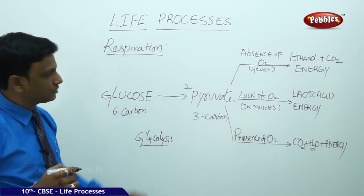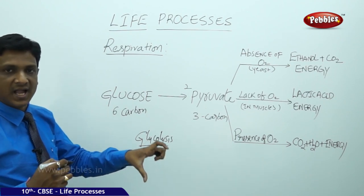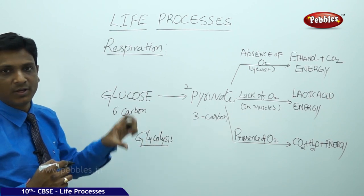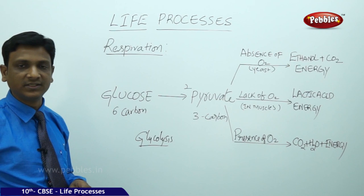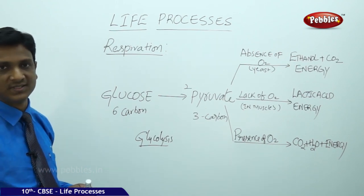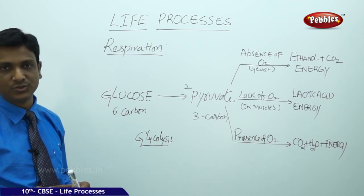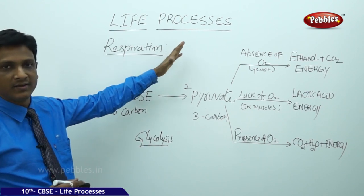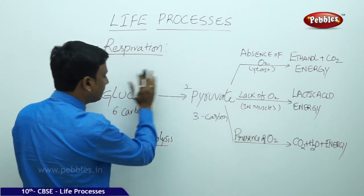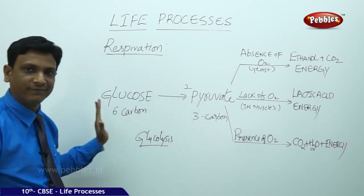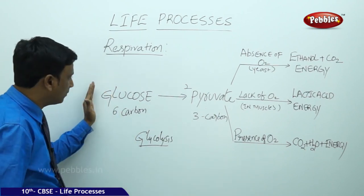Glycolysis is common for any kind of respiration, whether aerobic or anaerobic. Anaerobic organisms like bacteria and yeast carry out respiration without oxygen, while aerobic organisms like human beings carry out cellular respiration in the presence of oxygen. Importantly, for both aerobic and anaerobic organisms, the first step — conversion of glucose to pyruvate in the cytoplasm — does not require oxygen.